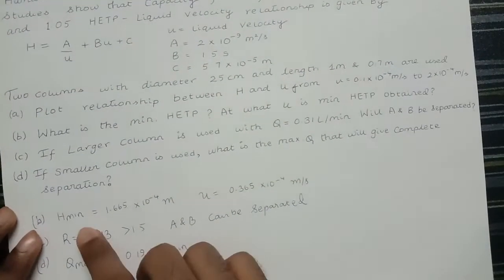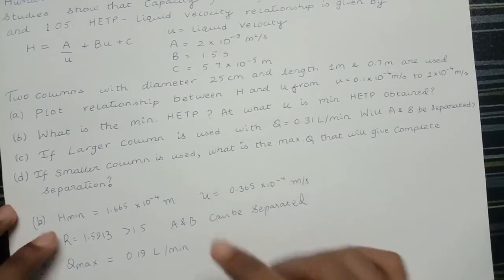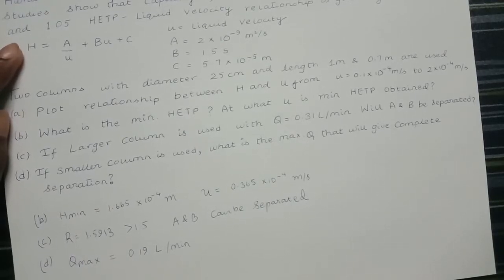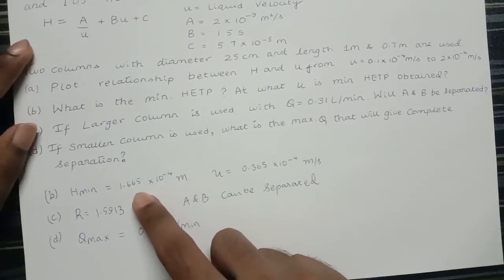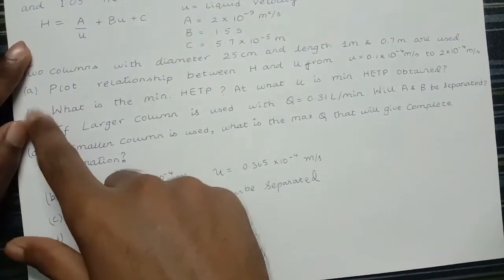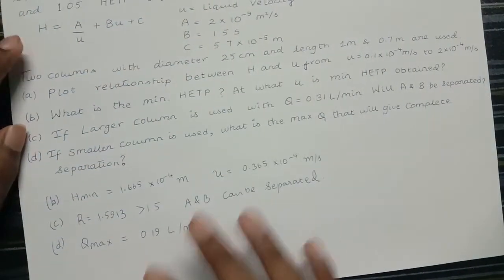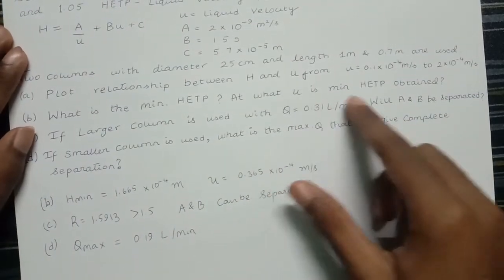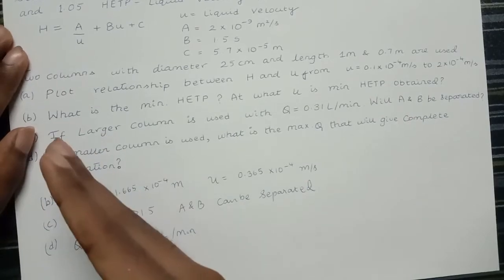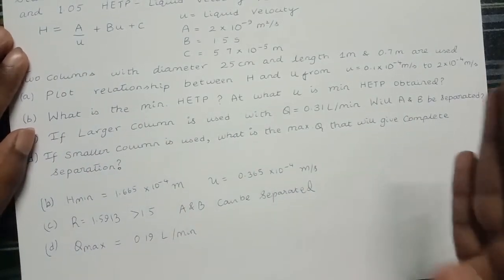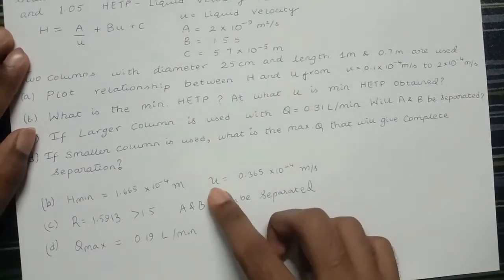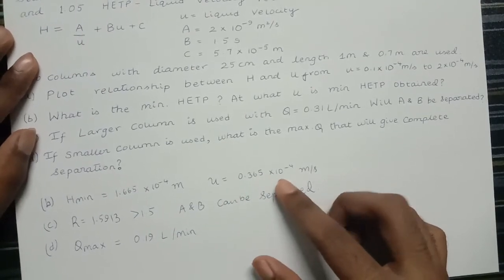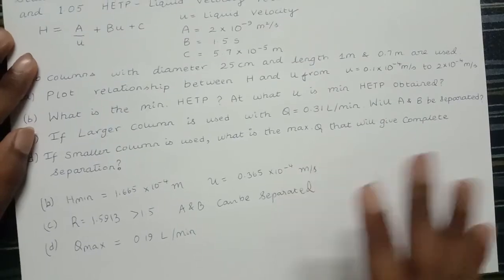Coming back from the plot, the minimum HETP of 1.66 × 10⁻⁴ meters is in agreement with the value we calculated in part b by differentiating the van Deemter equation with respect to u and setting the slope to zero. The optimal velocity that gives this minimum HETP lies between 0.3 × 10⁻⁴ and 0.4 × 10⁻⁴ meters per second, which matches our calculated value of 0.365 × 10⁻⁴ meters per second. Thank you.